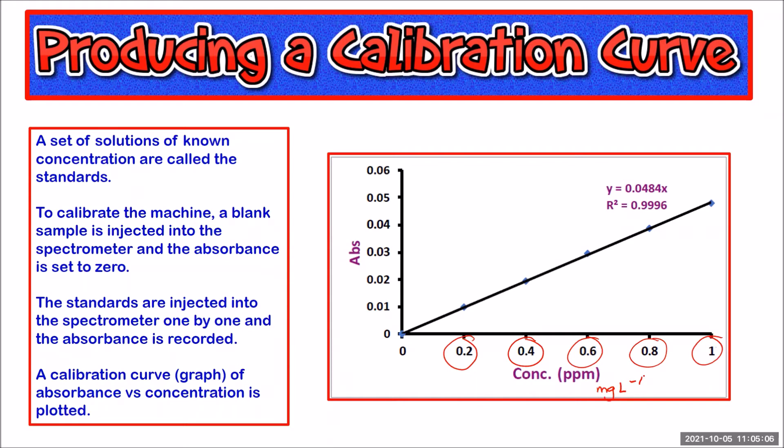To calibrate the machine, first of all you inject a blank sample and set the absorbance to zero so that you get your zero point. Then your standard solutions that you've made up, one by one they're injected into the spectrometer and their absorbance is recorded and we plot each of those absorbances to produce what's known as a calibration curve.